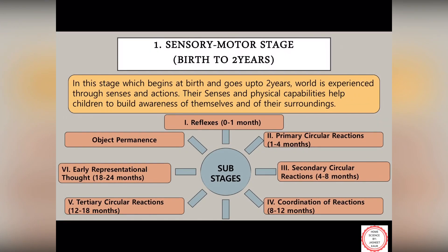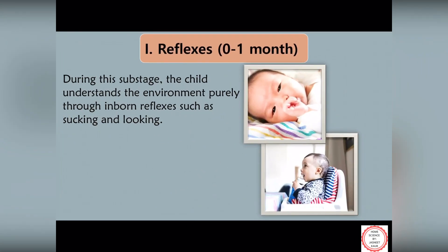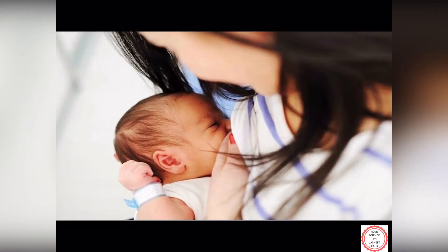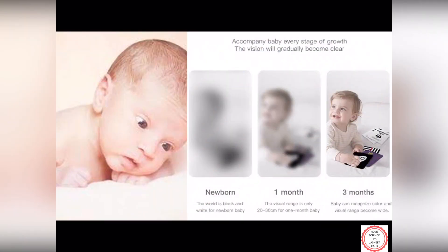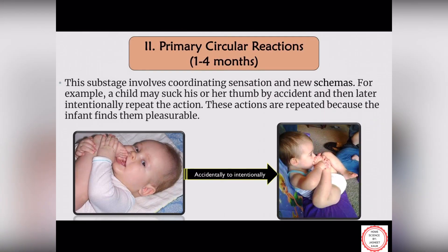There are certain important characteristics of this stage which can be divided into six sub-categories, each focusing on the development of a new skill. Starting with reflexes — reflex means sudden action, the ability to move quickly. This sub-stage begins at the time of birth to one month of age. At birth, a baby possesses reflexes such as sucking and looking. He uses these two reflexes to understand his surroundings. While drinking mother's milk he uses the sucking reflex, and since the baby's vision is not clear, he recognizes his mother just by gazing at her face.